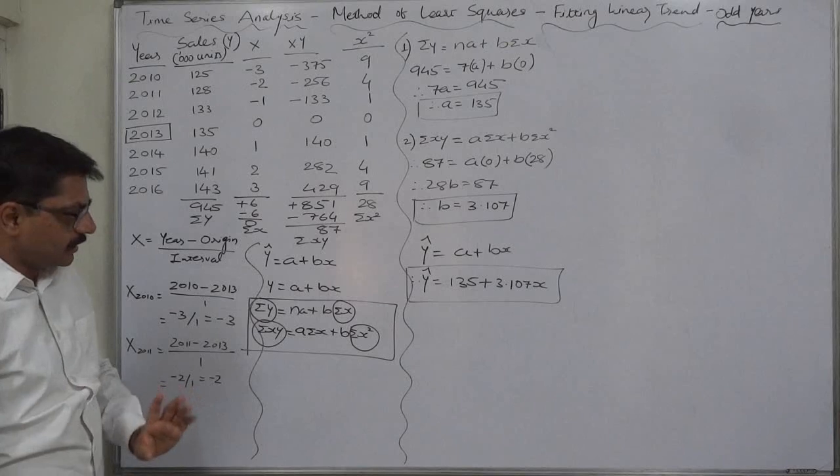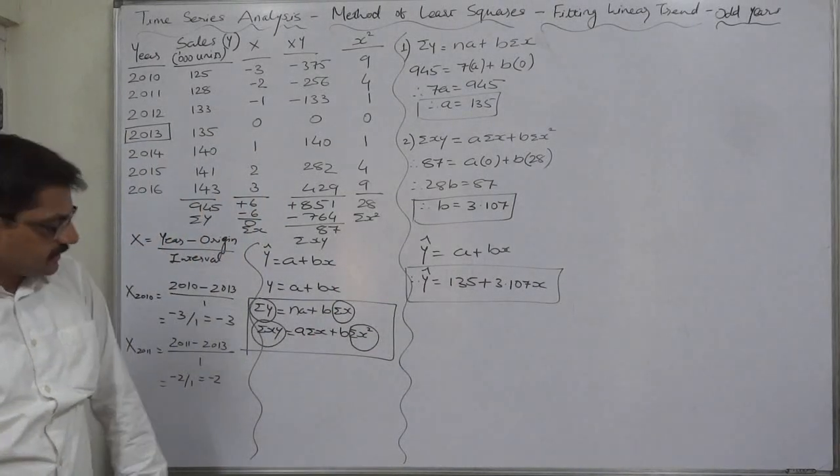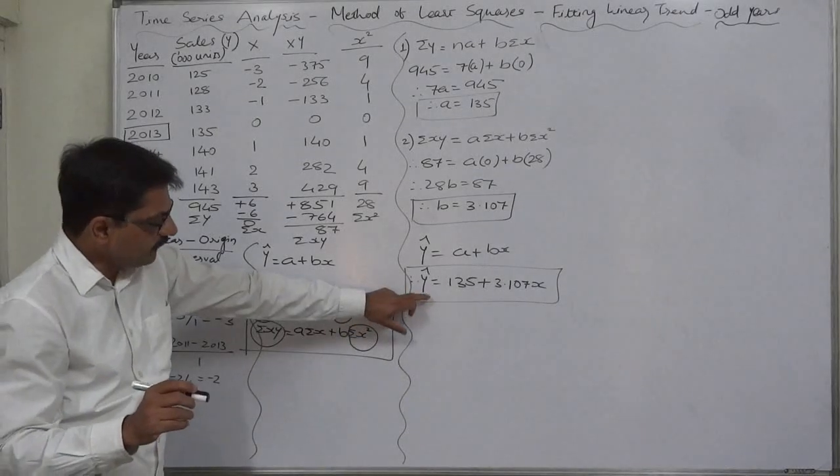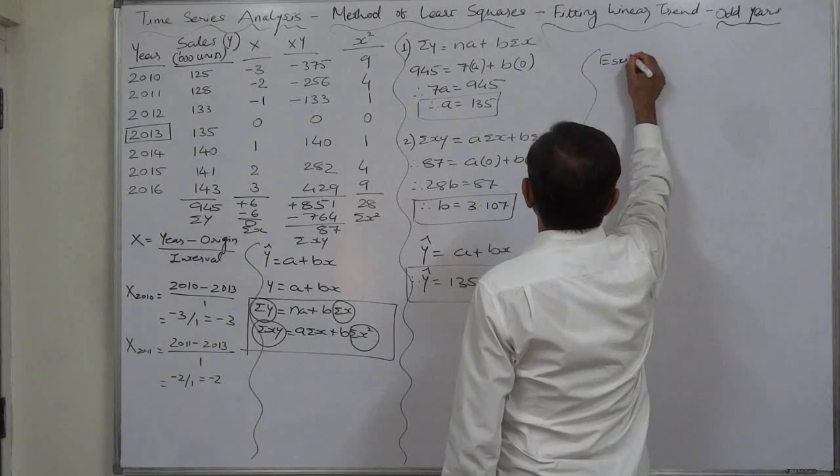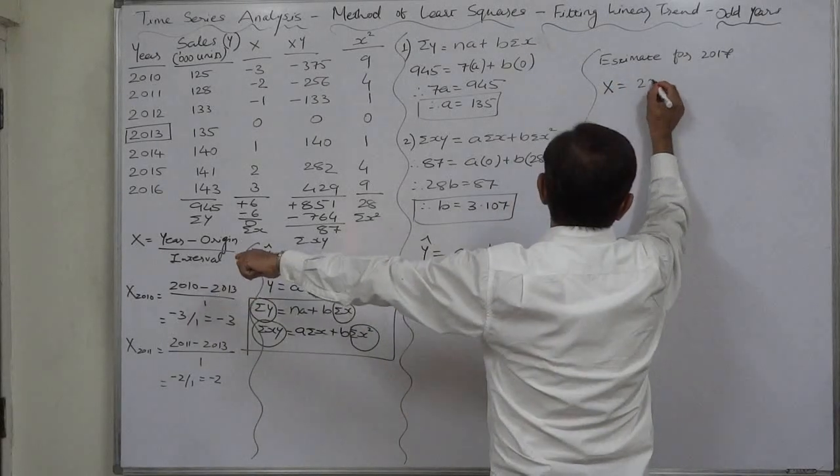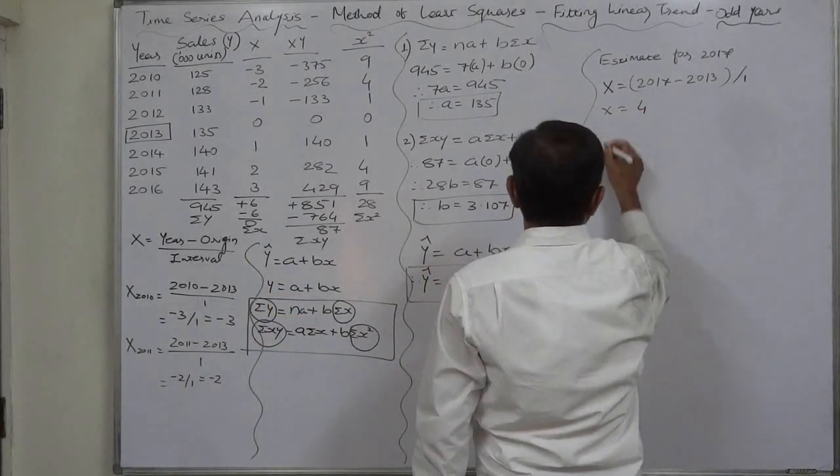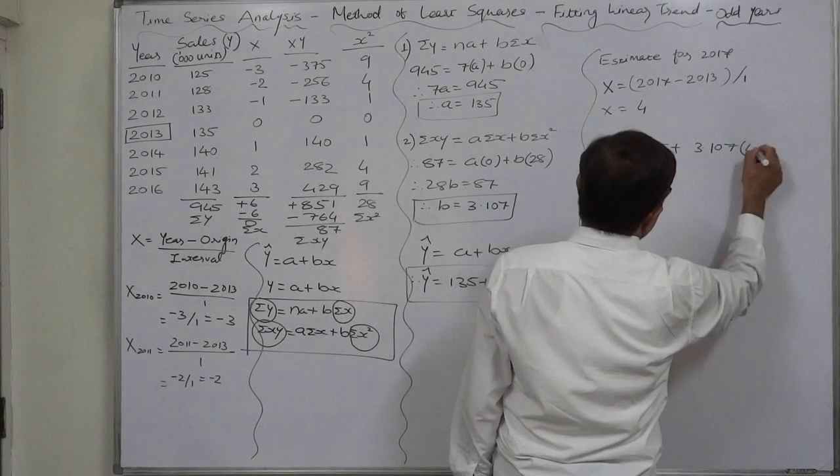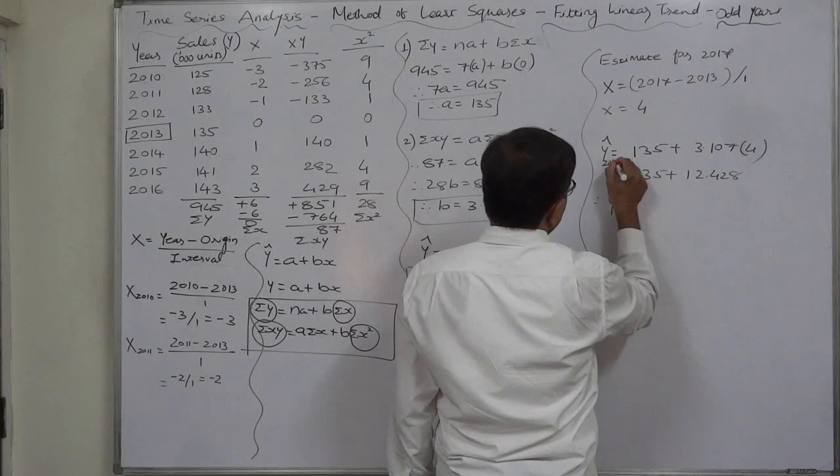In general, now for what purpose we can use this relationship or this functional relationship? If we substitute value of X, that means value of time, we can have the estimated value of our phenomena, that is sales. Let's find out the estimate for 2017. First of all value of X for 2017 will be year 2017 minus origin 2013 divided by interval 1, so it is 4. X is 4, so let's substitute X equals to 4 in Y cap: 135 plus 3.107 into 4, that is 135 plus 12.428.